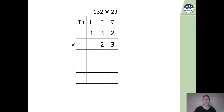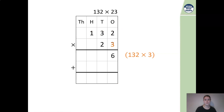Let's consider this question: 132 multiplied by 23. My first step is to take my 3 and multiply 132 by 3, starting with my 1s. So 2 multiplied by 3 gives us 6. 3 multiplied by 3 tens gives us 9 tens. And 3 multiplied by 1 lot of 100 gives me 3 lots of 100.